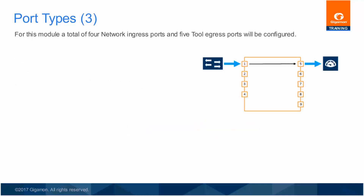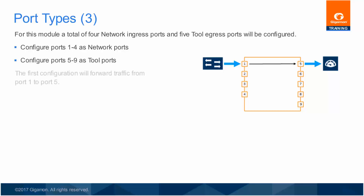For the examples in this module, ports 1-1-X1 through 1-1-X4 will be network ingress ports, and ports 1-1-X5 to 1-1-X9 will be tool egress ports. The first configuration example will forward all traffic from network port 1 to tool port 5. Since all ports are network ports by default, ports 5 through 9 need to be configured as tool egress ports before configuration of traffic forwarding is possible.